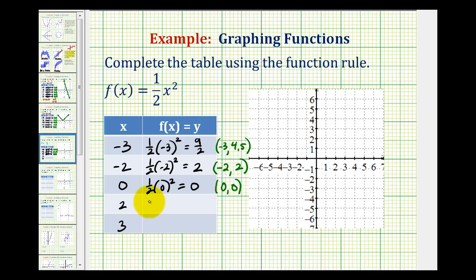And then when x equals positive two, y would be one half times two squared. Well, two squared is the same as negative two squared, so we'd have four times one half, or two. So the graph of the function contains the point two, two.